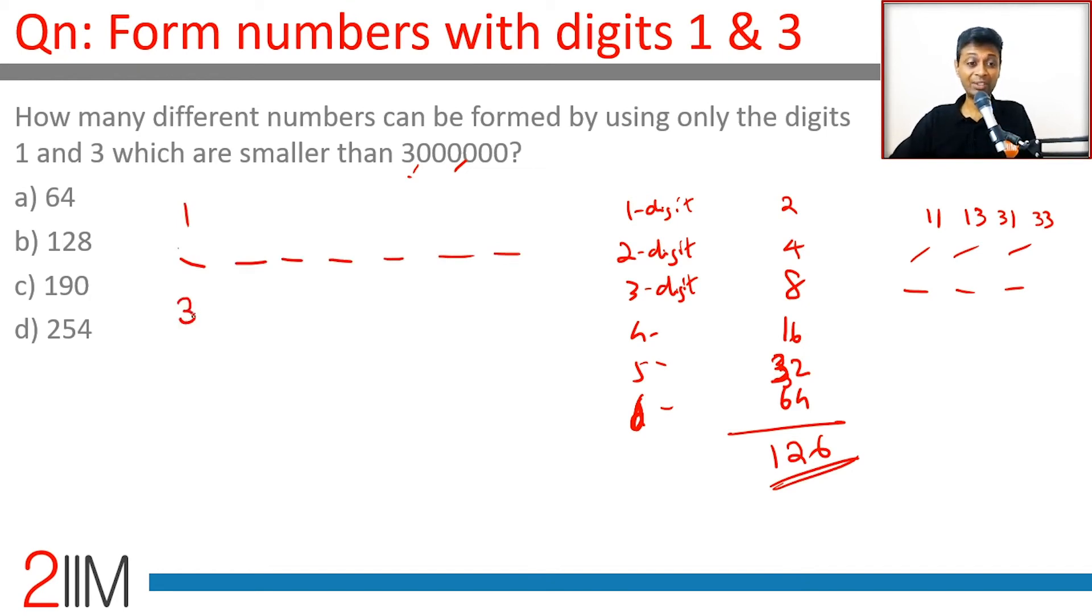If it were 3, we cannot count because anything following that will be greater than 3 million. If it is 1, we can count everything because starting with 1 million something, the number will be less than this. So how many possibilities are there? 2^6. Each of these digits could be 3 or 1, two possibilities.